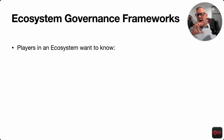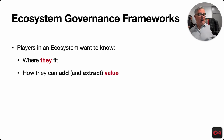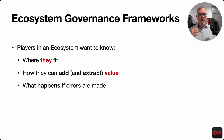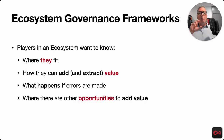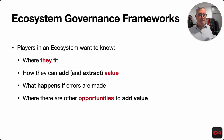An ecosystem governance framework helps the players in the ecosystem answer the following questions, because they really want to know: where they fit, how they can add and extract value. Value accrues to the ecosystem as well, but they have a right to extract some of the value they created. What happens if and when errors are made? And where are there other opportunities to add value — where is someone not doing a sufficient job, doing things in an expensive way? They may look and say, I can do that cheaper, better, faster. I can dive in there and create more business for my own company, my organization, my code base if I'm a completely decentralized application, a DApp. It's kind of like a rule book for the game — you need to understand the rules if you're going to play.